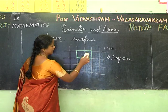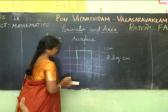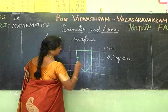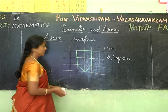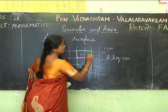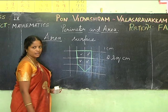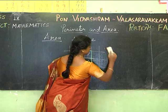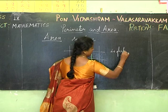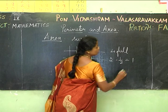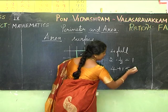Let's take another figure. To find the area, count the number of squares: there are 4 full squares and 2 half squares. Two half squares equal 1 full square, so the total area is 4 + 1 = 5 square centimeters.